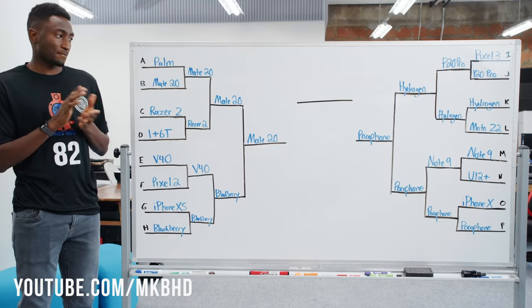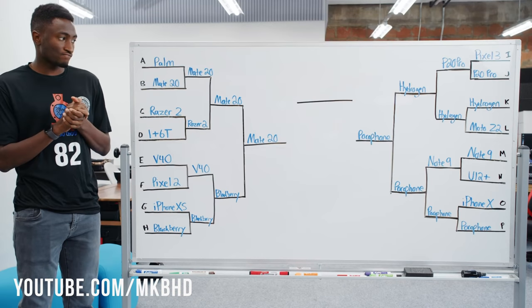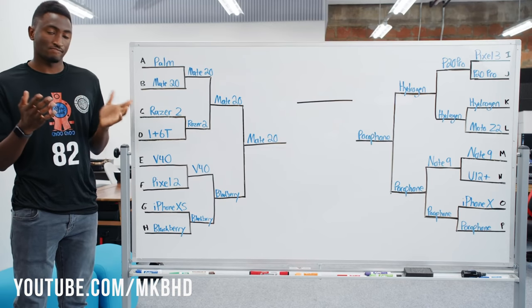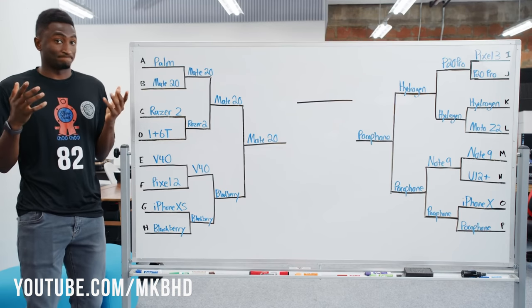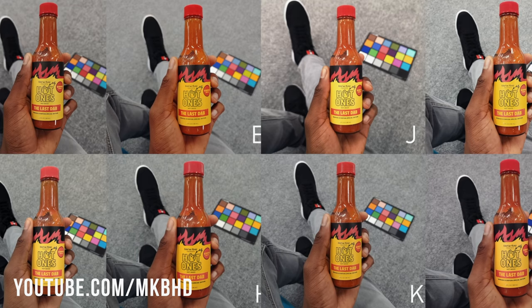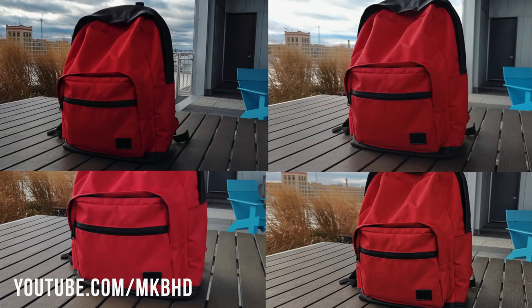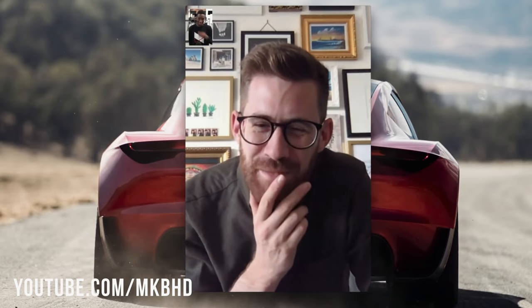Did you guys see the MKBHD video where he did a blind taste test letting people choose their favorite photo out of all the different smartphones on the market? People's favorite images were all based on things like exposure, color, and contrast — and that's all stuff that is really easy to edit after you took the photo. So let's make your photos look great whatever phone you shot it on.